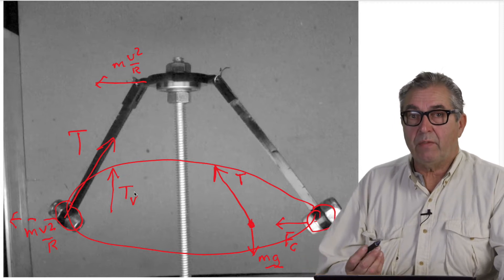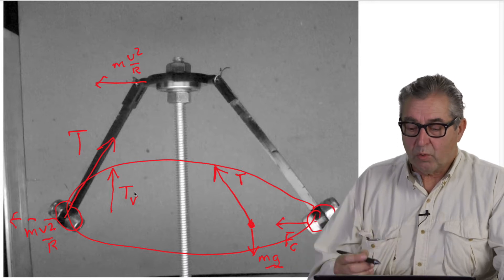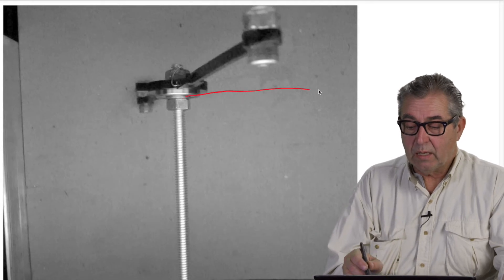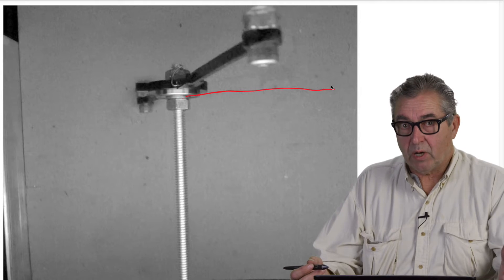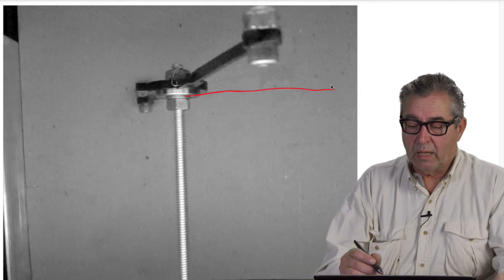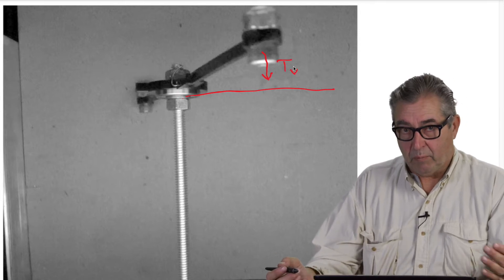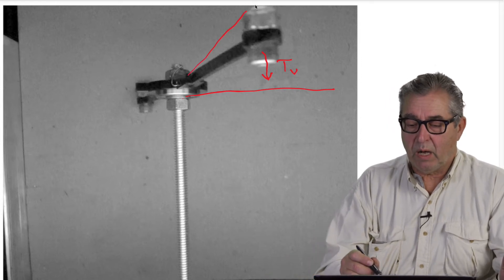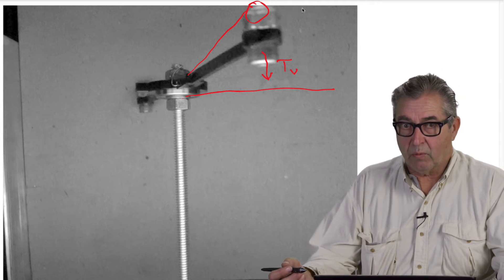So the bob and the shaft begin to move upward and swing upward towards the horizontal. As it reaches the horizontal, it has motion upward, and therefore it carries on above the horizontal, at which point the tension force is now acting downward, slowing the upward motion of the bob, until it reaches its maximum height, where it stops moving upward and then begins to move downward.